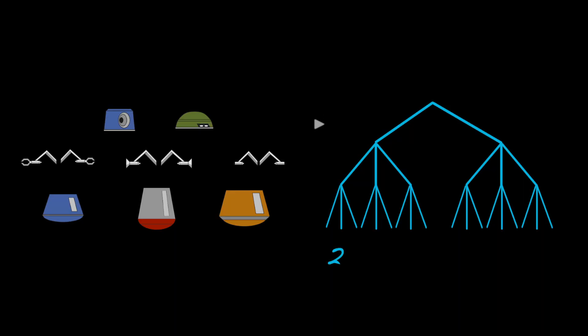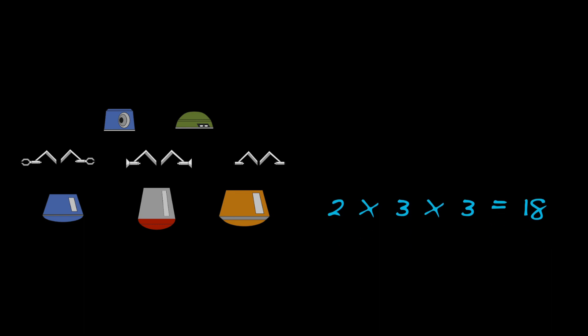The diagram has helped us understand that we just need to multiply the number of each kind of part. So if we're just interested in how many combinations are needed, we don't need the diagram anymore.